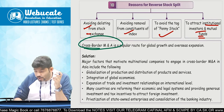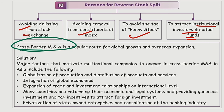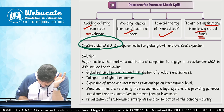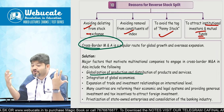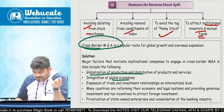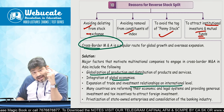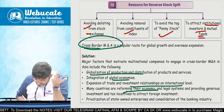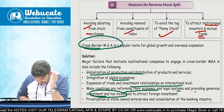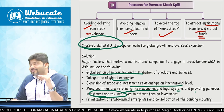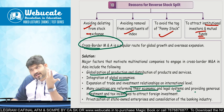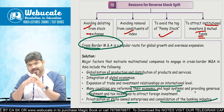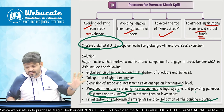The last topic in M&A is cross-border M&A, which is popular for global growth. Major factors for cross-border M&A include: globalization of products and distribution, integration of global economy, expansion of trade and investment relationships at international level. Many countries are reforming their economic and legal systems, providing generous investment and tax incentives — countries like Mauritius, Dubai, and Singapore allow you to set up companies and give tax benefits. Privatization of state-owned enterprises and consolidation of banking industries are also factors.